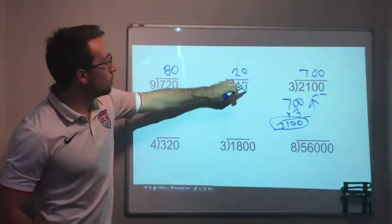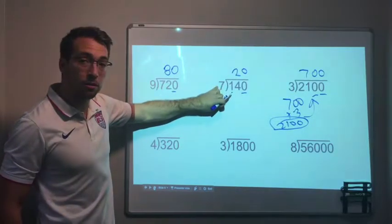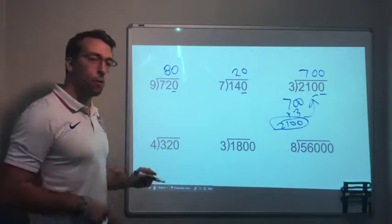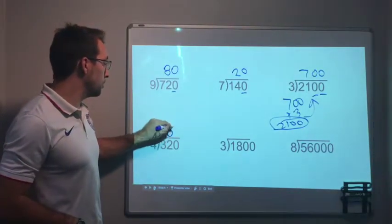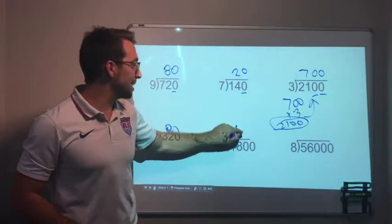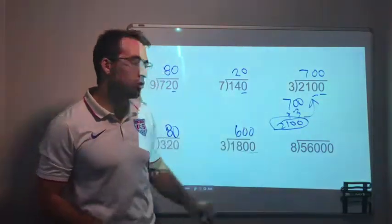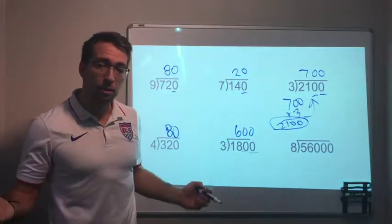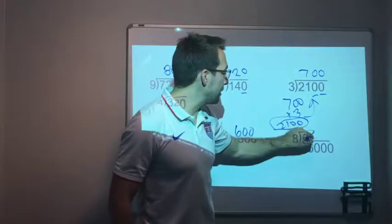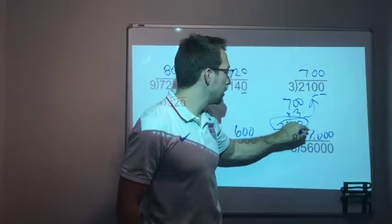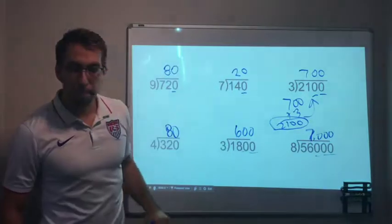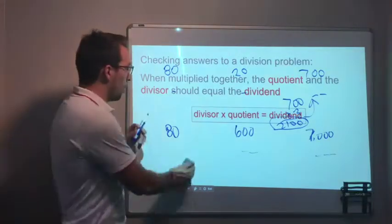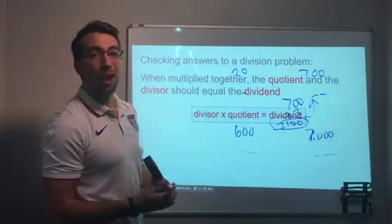Your quotient multiplied by your divisor always equals the dividend. 320 divided by 4: 32 divided by 4 is 8, add one zero — 80. 1800 divided by 3: 18 divided by 3 is 6, add two zeros — 600. And 56,000 divided by 8: 56 divided by 8 is 7, add three zeros — 7,000.